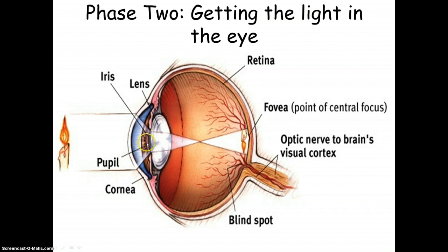And right behind the pupil here, we have the lens. And the lens focuses incoming light rays into an image on the retina, back here. And the retina is the multi-layer tissue on the eyeball's sensitive inner surface.